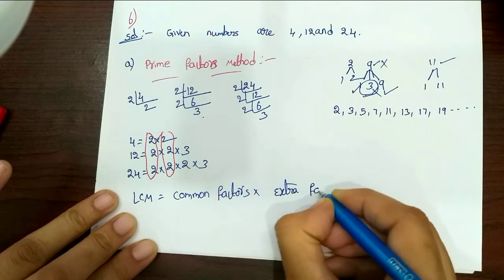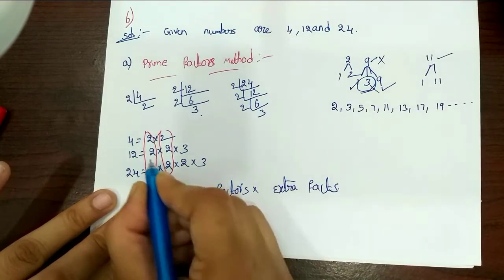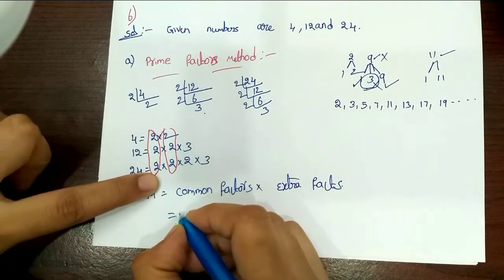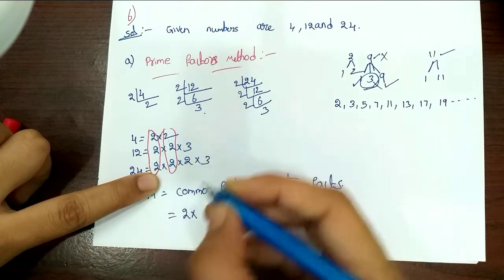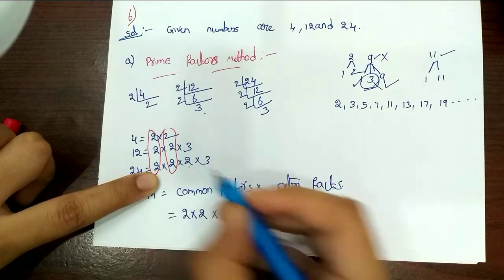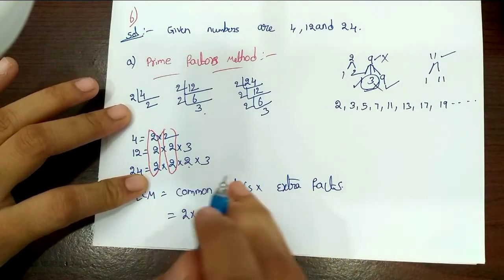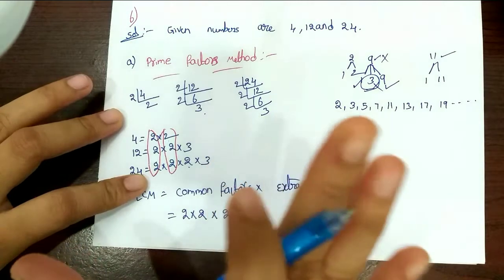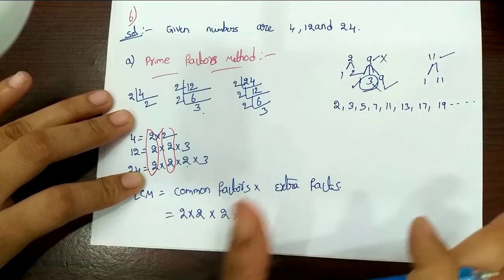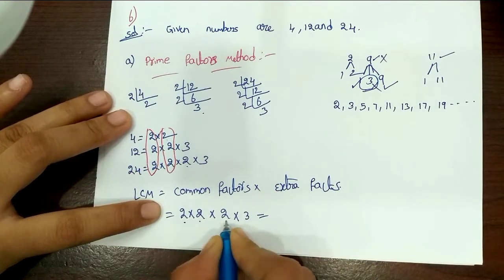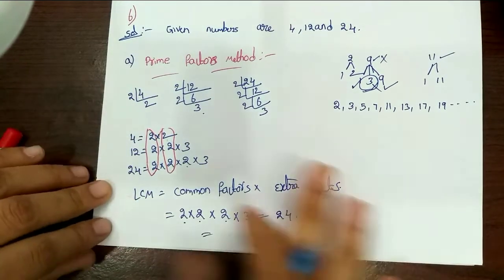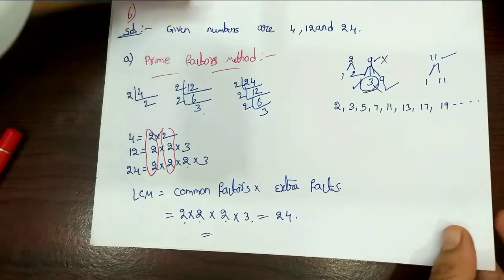So 3 into 3. Common factors end here. You have two sets. Each set is one time. So prime factor method complete is done. The LCM result: 4, 2, 8 — so 8 into 3 is 24. So 24 is done. Prime factor method complete type is done.